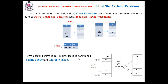There are two possible ways to assign a process to partitions. When selecting a process to assign to a respective partition, there are two methods available: one is a single queue and the other is multiple queues.